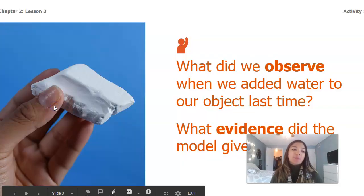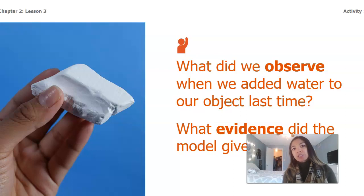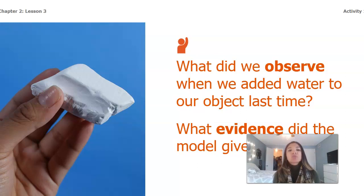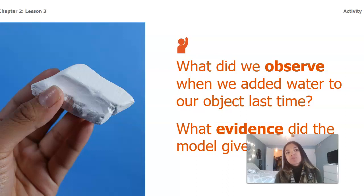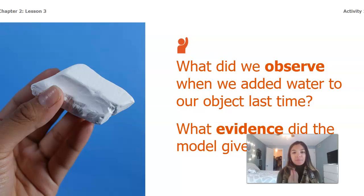Last lesson we watched a model about how water can affect a landform. In our model we used flour and a spray bottle that had water in it. When we added water to our flour, we noticed that initially the flour was really light, fluffy, and powdery, and then once we sprayed the water onto it, it created more of a solid — changing from a powder to a solid.